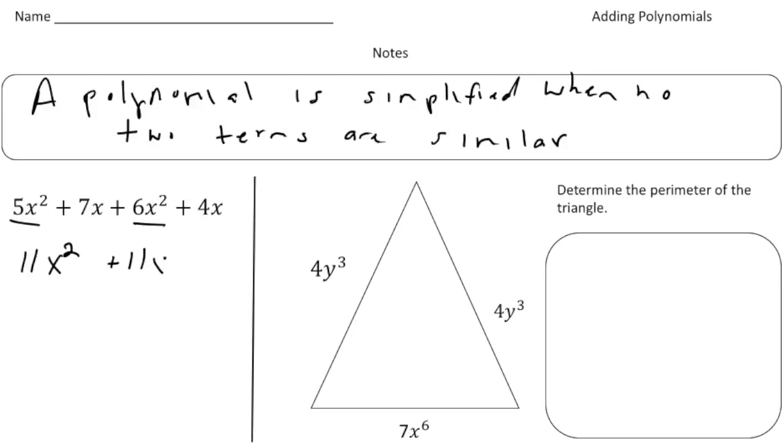Last but not least, it's always good to write it in standard form. Remember, you want to make sure it goes in order from highest degree to lowest degree. So 11x² + 11x is already written in standard form.